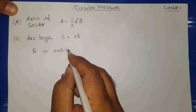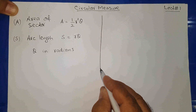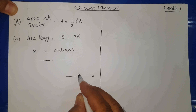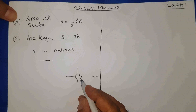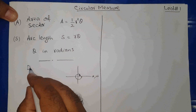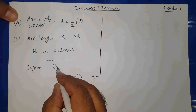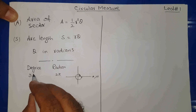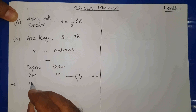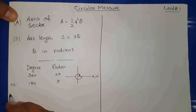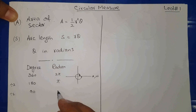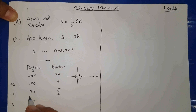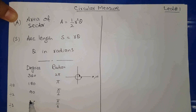θ must be in radians. There is one particular link between degrees and radians. When you move from 0 to 2π, that is called 360 degrees. When you divide by 2, you get 180° = π radians. Divide again by 2: 90° = π/2. Divide by 3: 30° = π/6. So we have these links available.